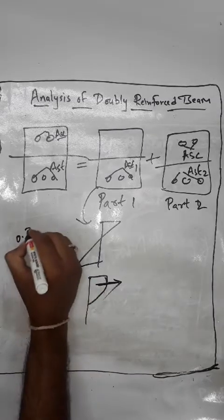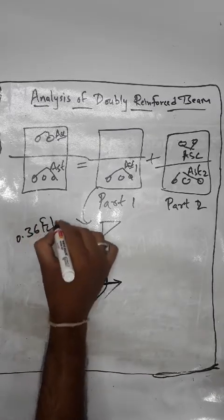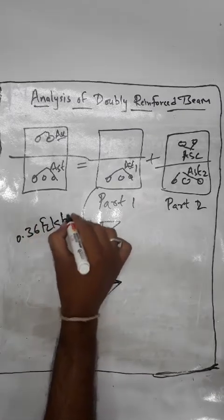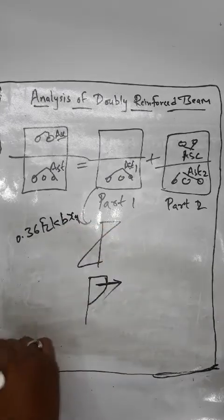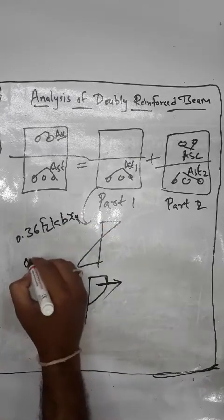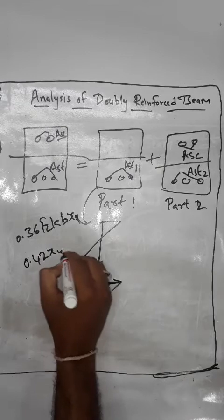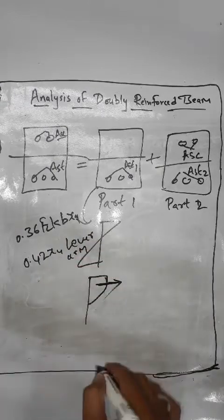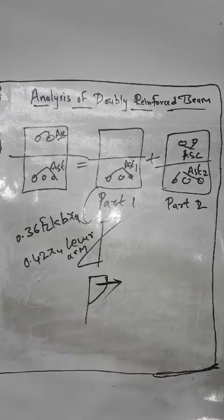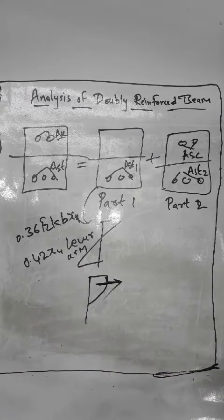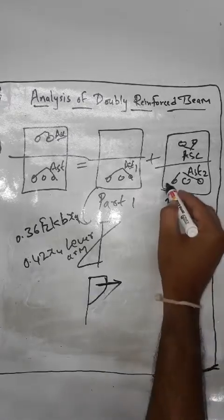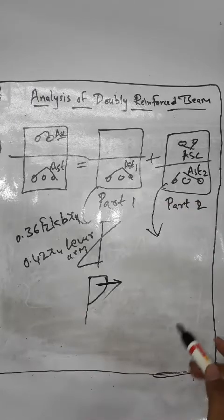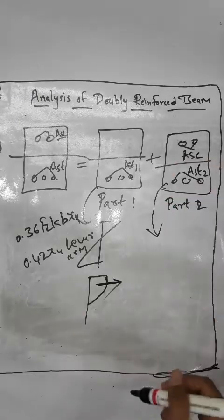For Part 1, which is the singly reinforced portion, we have already found the total force and moment: 0.36 FCK·B·XU is the compression force and 0.42·XU is the lever arm. This part was already discussed when we studied the analysis of singly reinforced beams. Now we have to add Part 2 to this.